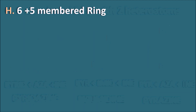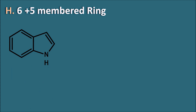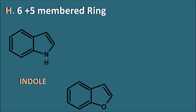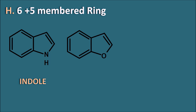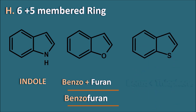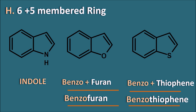Now let us go with the 6+5-membered ring systems. The six-membered ring is benzene and the second is the heterocyclic ring pyrrole, so it can be written as benzopyrrole. But this ring system is commonly known as indole — indole is a 6+5-membered ring system with nitrogen as the heteroatom. Similarly, benzene fused with furan gives benzofuran, and benzene fused with thiophene gives benzothiophene. These names are directly derived using the term 'benzo' when benzene is fused with heterocyclic ring systems.